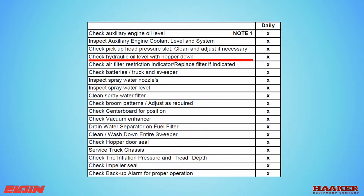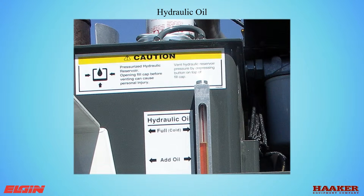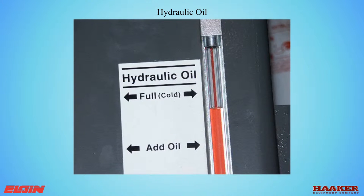Check the hydraulic tank oil level. The hydraulic tank is located on the left side of the sweeper. On a CNG sweeper, you can find it under the auxiliary engine on the right side. The correct oil level is between the add and full arrows with the hopper down. Do not start the sweeper if there is no oil in the sight glass.